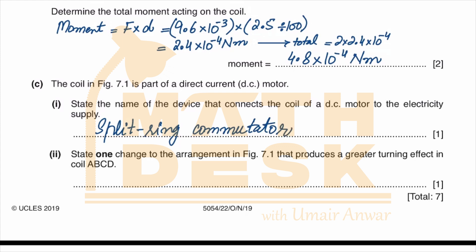State one change to the arrangement in figure 7.1 that produces a greater turning effect in the coil ABCD. We can produce a greater turning effect by using a stronger magnet. There are other ways which would also increase the turning effect: if we increase the current flowing through the coil, if we use greater EMF, or we use smaller resistance coil, all of these would increase the turning effect.